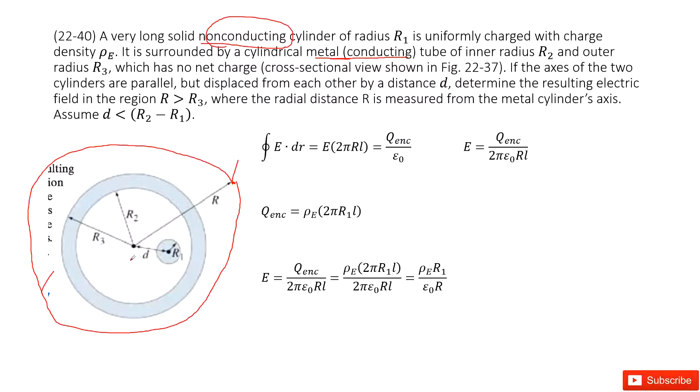And then we can see the electric field times the Gaussian surface. This is 2πR, this is surface, times L, cylindrical, equal to enclosed charge divided by ε₀. So the electric field is equal to enclosed charge q divided by 2πε₀ times R times L.